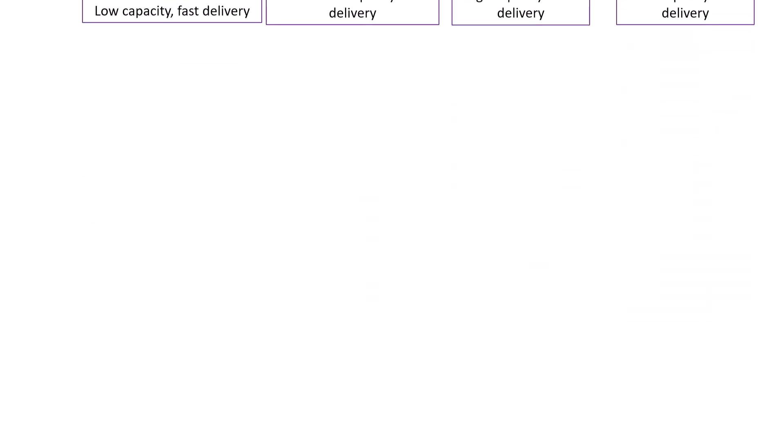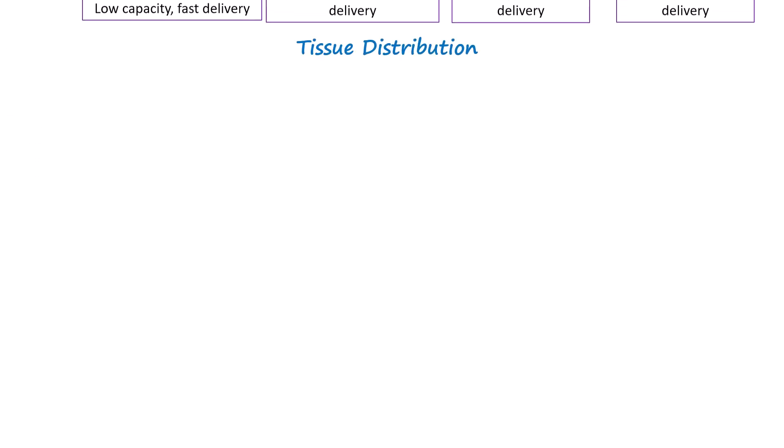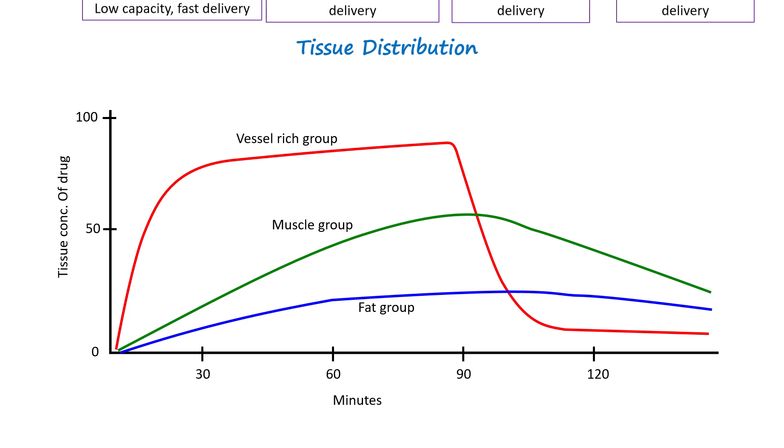If we plot the tissue concentration of anesthetics against time, we get a graph like this, with the vessel-rich group receiving the anesthetic faster than other tissue groups. At the conclusion of anesthesia, the anesthetic concentration in the blood decreases. When this happens, the concentration gradient reverses and the anesthetic begins to redistribute from the tissue back into the blood or plasma.